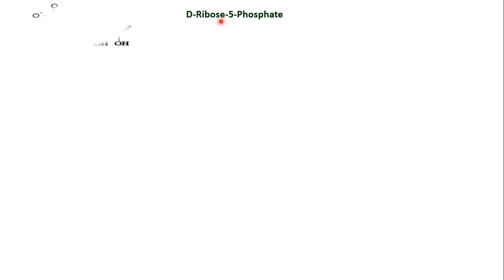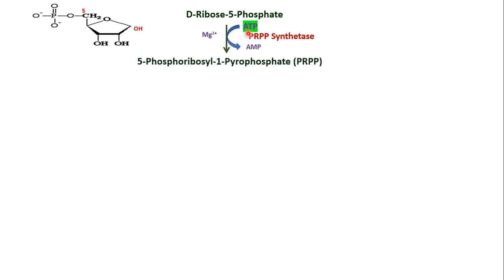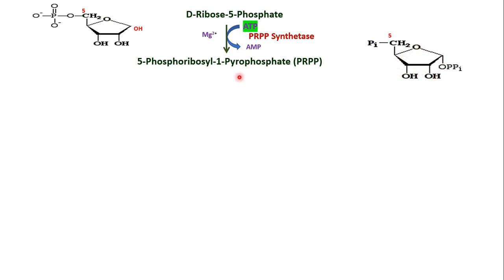The first substrate is ribose 5-phosphate, which you get from the HMP pathway of carbohydrate metabolism. On the 5th carbon there is a phosphate. Ribose 5-phosphate reacts with ATP and forms phosphoribosyl pyrophosphate, abbreviated as PRPP. The enzyme is PRPP synthetase — ATP gives its pyrophosphate to ribose 5-phosphate to form PRPP. This step is also used for the synthesis of pyrimidine nucleotides, nucleotide coenzymes, and the salvage pathway, so it is considered a preliminary or preparatory step, not the first step of the de novo pathway.